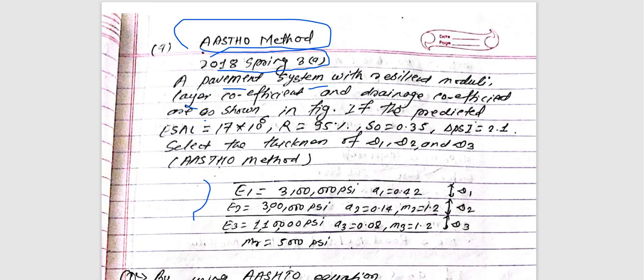If the predicted ESAL is equal to 17 into 10 to the power of 6, R is 95%, S-naught is 0.35, and ΔPSI is 2.1, select the thickness D1, D2, and D3.